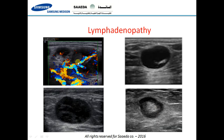Here are different kinds of lymph nodes — you can see the fatty hilum, slightly reduced. By Doppler exam, they show a benign appearance.